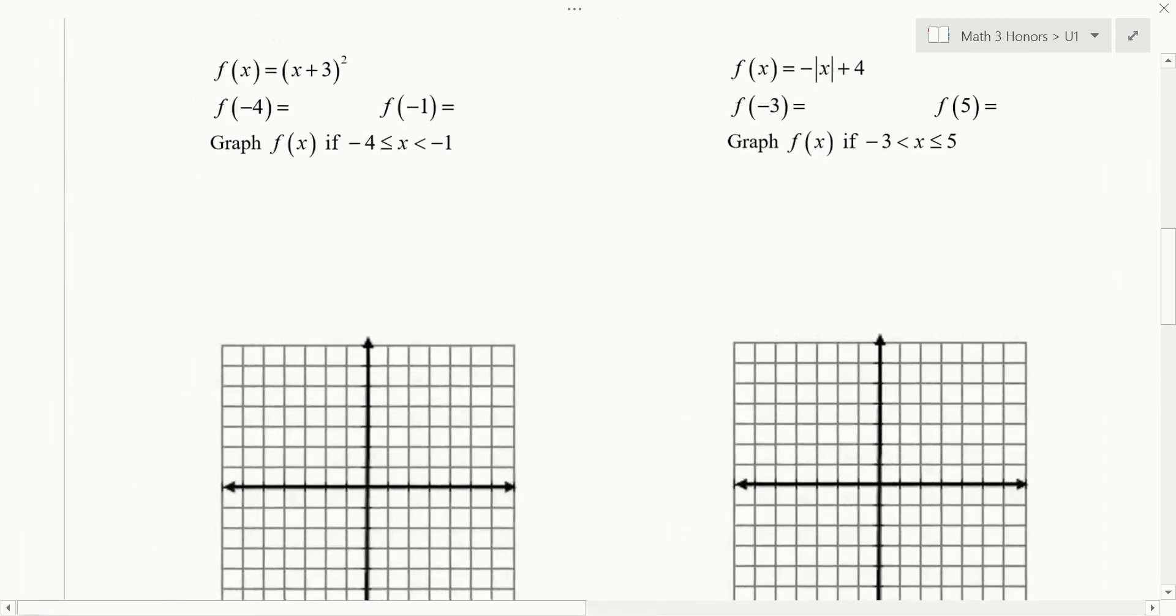So we are restricting the domain of this function, and first we could just think about how do we graph this. It's a parabola, but it's been translated from the parent graph which way? Left three units, and the parent graph goes through (0,0), so from (0,0), that gives us a new vertex. So if I go left three from (0,0), got my new vertex there.